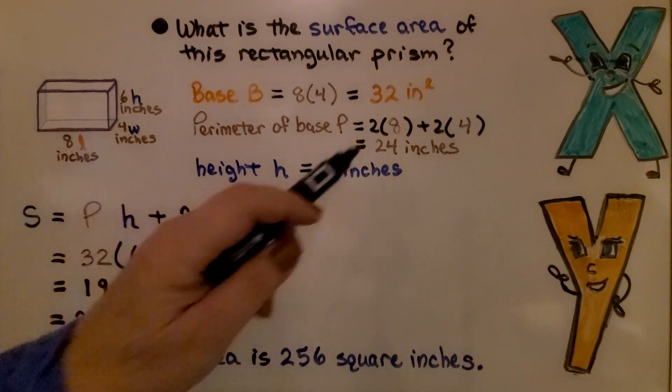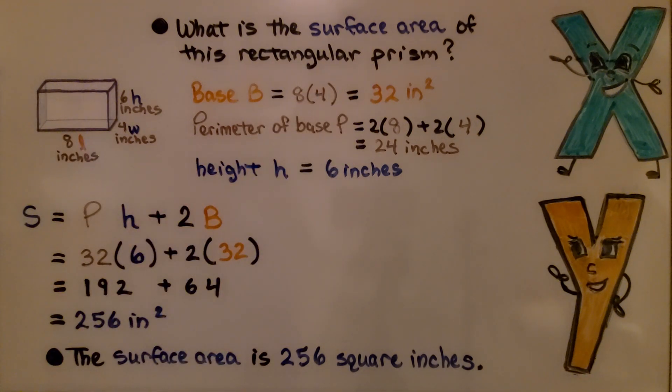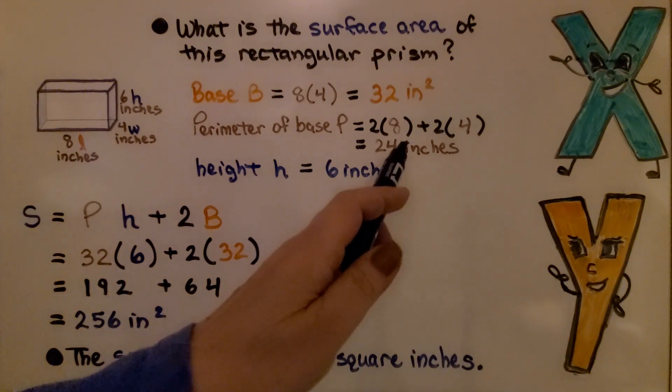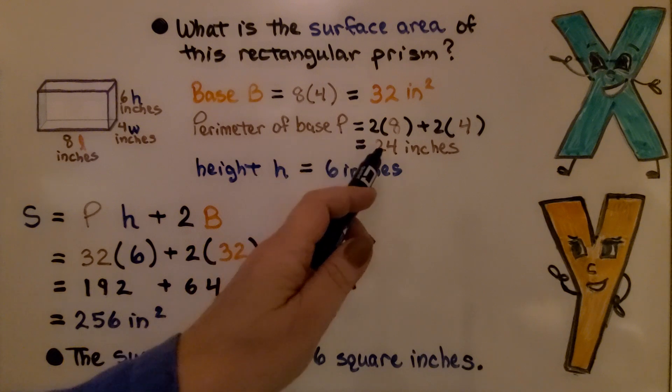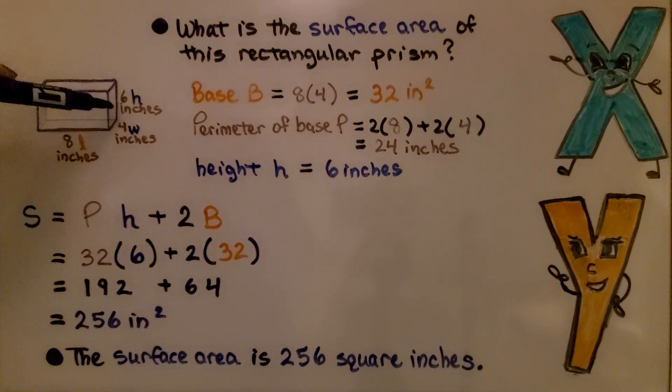This is the base down here. It's going to be 8 times 4, which is 32 inches squared. The perimeter of the base is 2 times 8, this 8 and the 8 in the back, and 2 times 4, this 4 and the 4 on the left. We have 24 inches for the perimeter of the base. The height is 6 inches.